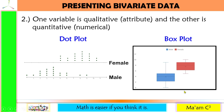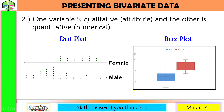For number two, when one variable is qualitative and the other is quantitative, we may use a dot plot or box plot. In the dot plot, the qualitative data is the sex, and the quantitative data is shown with dots representing measurements or counts. In a box plot, colors represent the qualitative data — blue for male and red for female — and the numbers represent the quantitative data. In these types of plots, we can determine the mean, median, and mode.